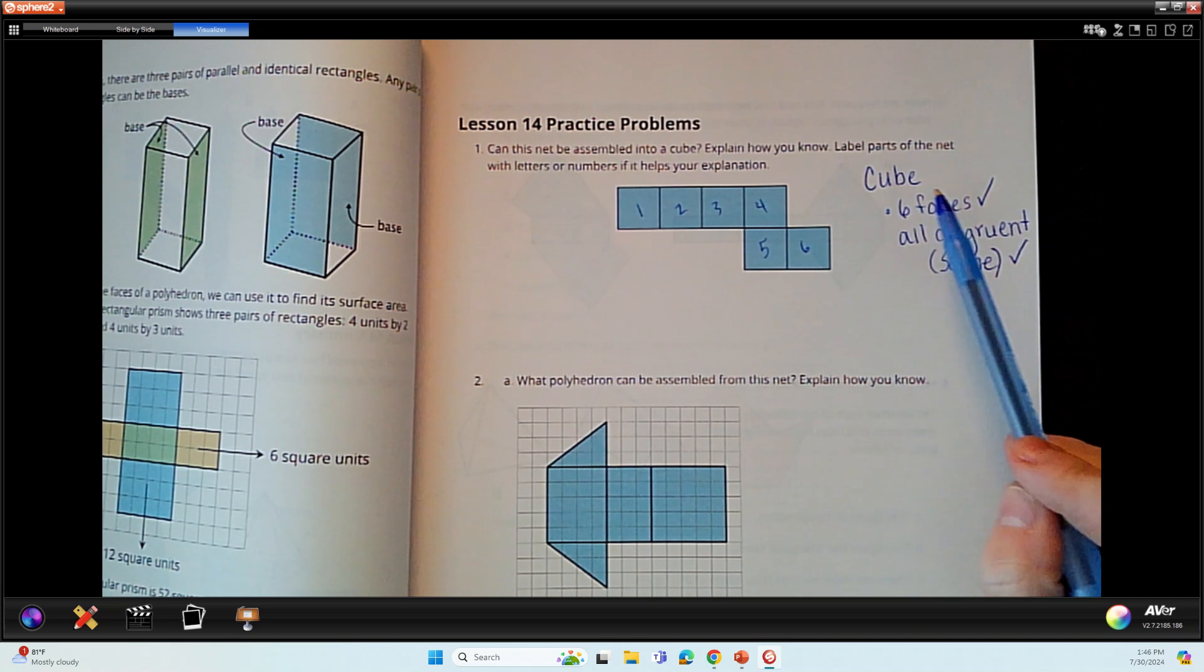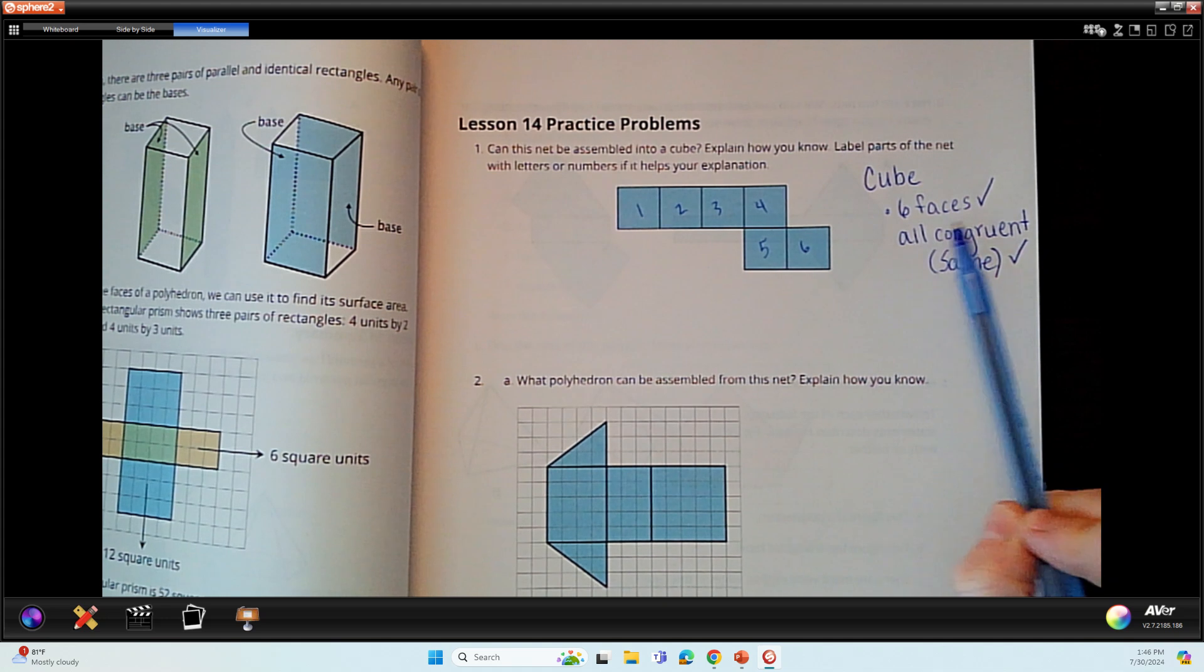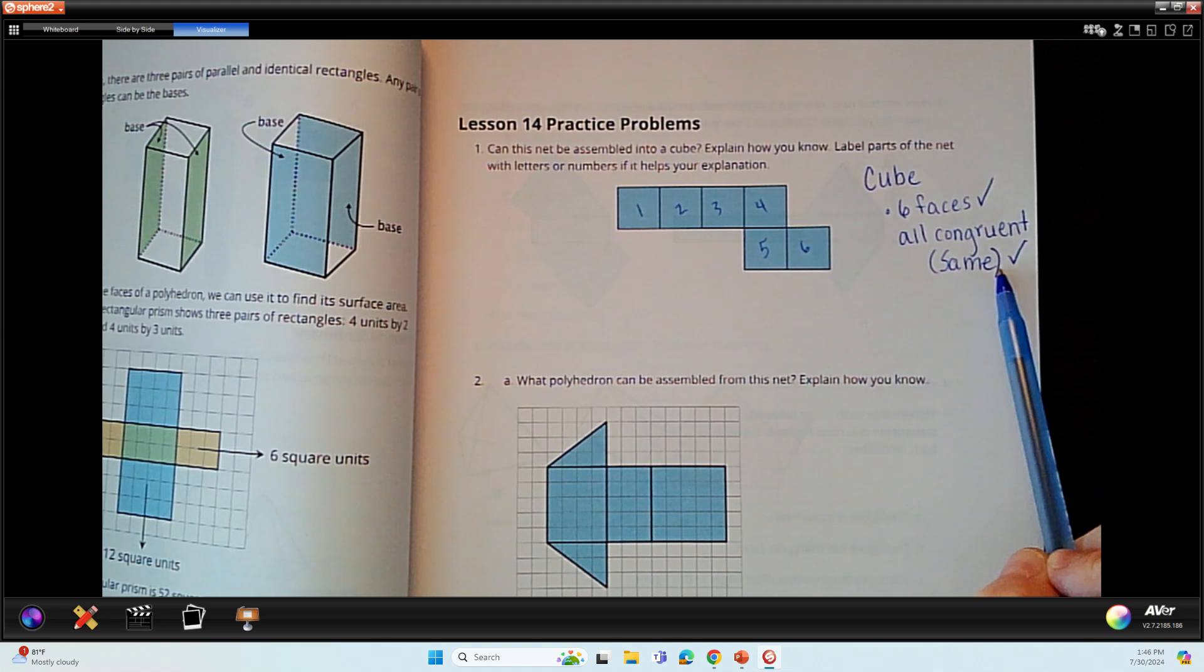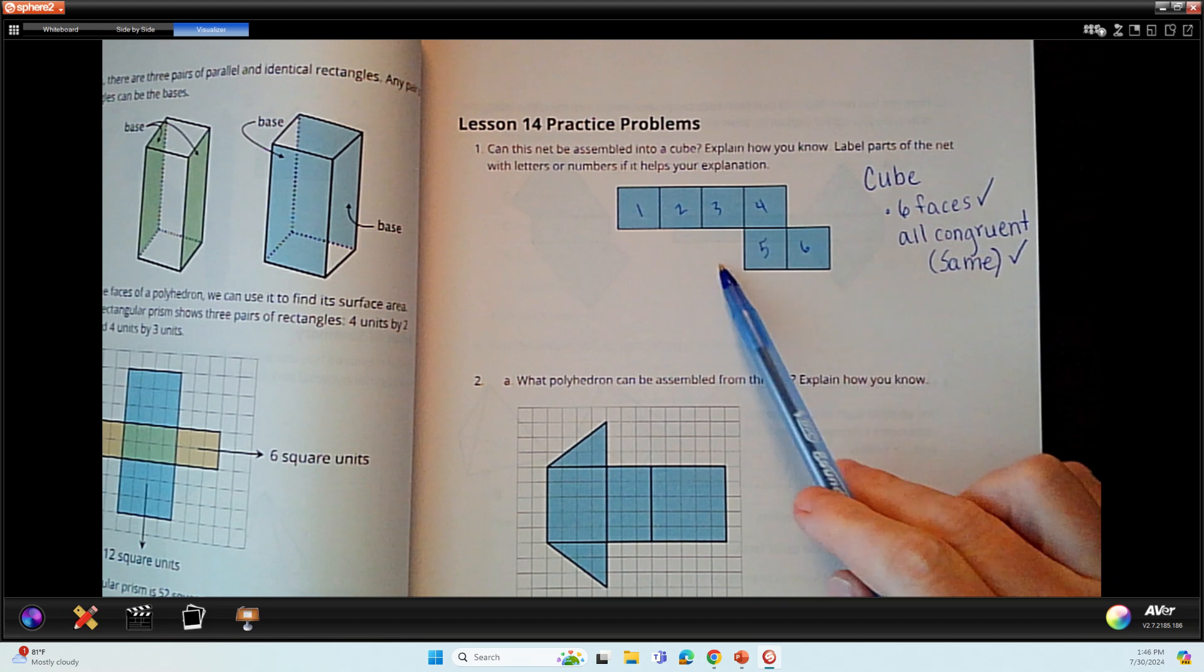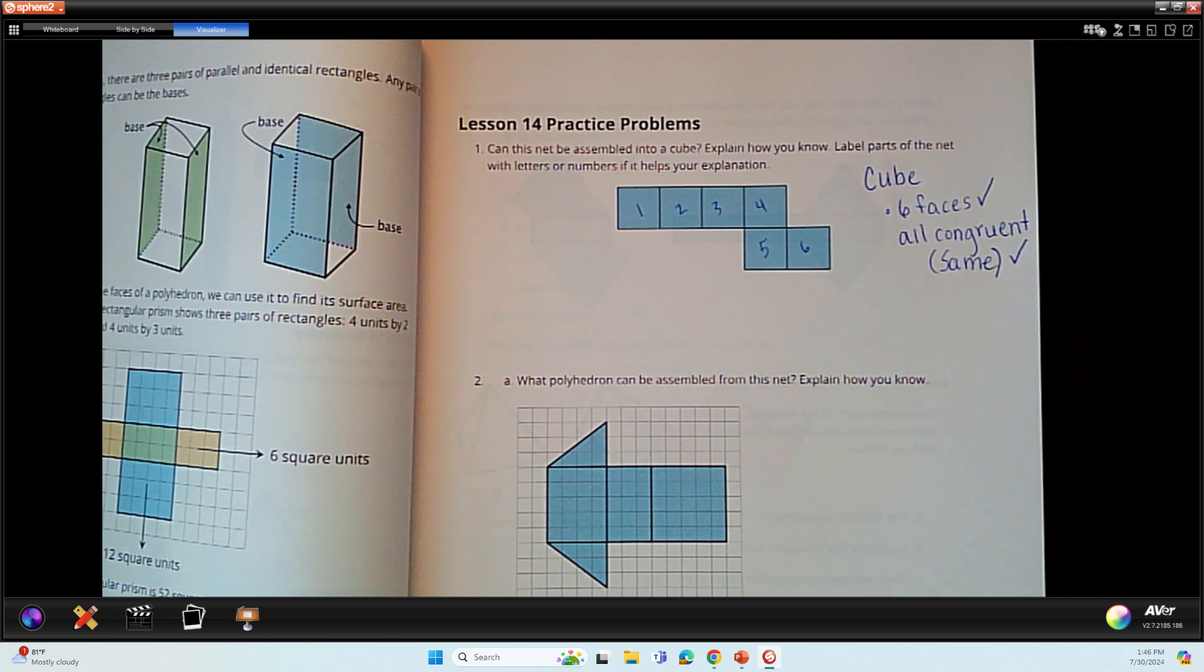So what I have here are a couple things that we know are true about cubes. We know that cubes have six faces that are all the same. So we can see here that there are six squares, so this is good. So far we know we have the features of a cube, but will this net fold up and close in and create a cube?